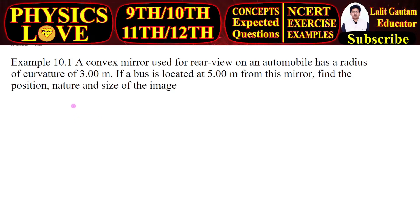Hello physics lovers, how are you all? This is example number 10.1 from class 10th physics. A convex mirror used for rear view on an automobile has a radius of curvature 3 meter. There is a convex mirror and the radius of curvature of this convex mirror is given, that is 3 meter, and we take it positive because it is a convex mirror.